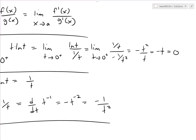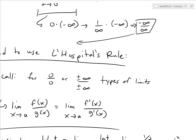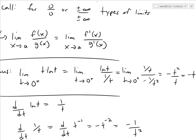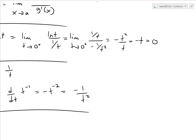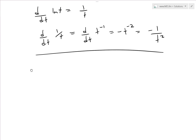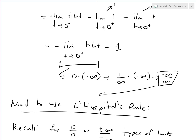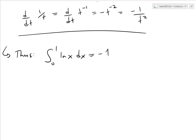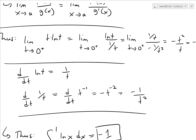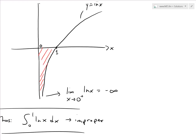Since the limit of t · ln(t) as t approaches 0 from the right equals 0, the bottom infinity grows faster and the expression approaches 0. Going back to our expression, the integral from 0 to 1 of ln(x) dx equals negative 0 minus 1, which is negative 1. Scrolling back up, this integral represents an area that is negative 1 because it lies below the x-axis, so the actual area under the curve is 1 — a finite area.